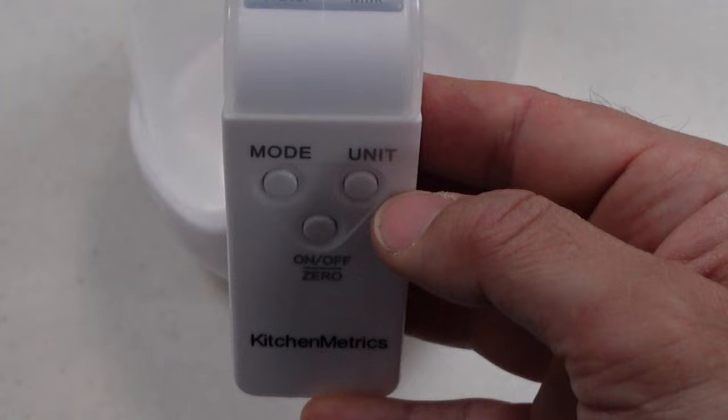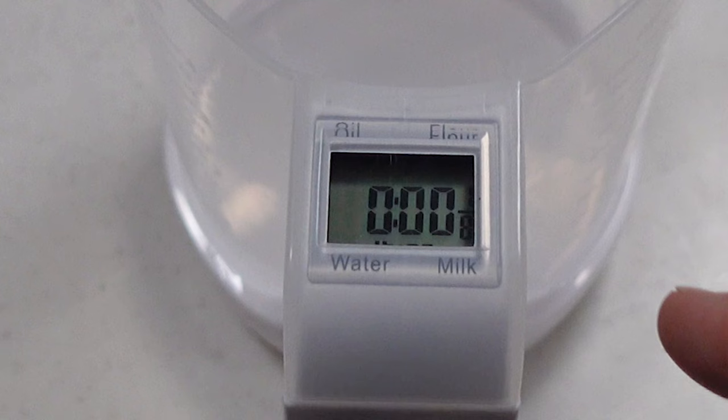The unit button here just changes the measurement units. So the scale can measure in grams like we're looking at right now, or if I were to push this button now it's going to measure in pounds and ounces.